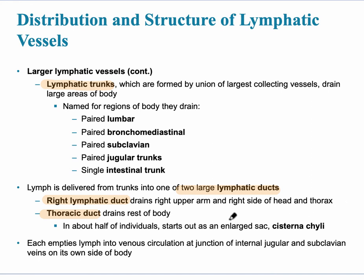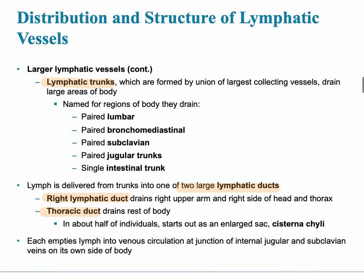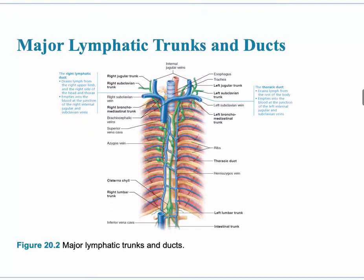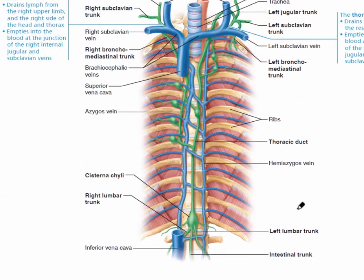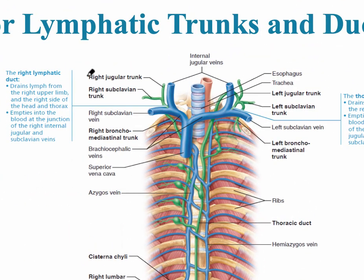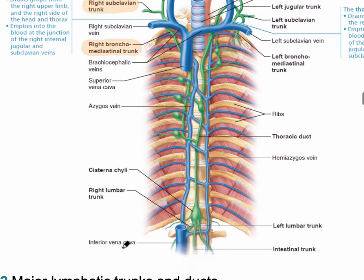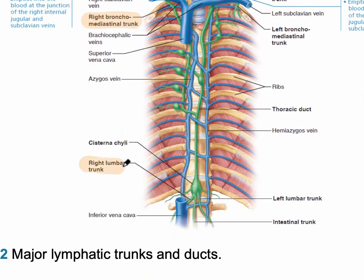Let's look at a diagram showing the major lymphatic ducts and trunks. The major lymphatic trunks are named for the regions of the body. We see the jugular trunks, the subclavian trunks, the bronchomediastinal trunk, the lumbar trunk, and the intestinal trunk.